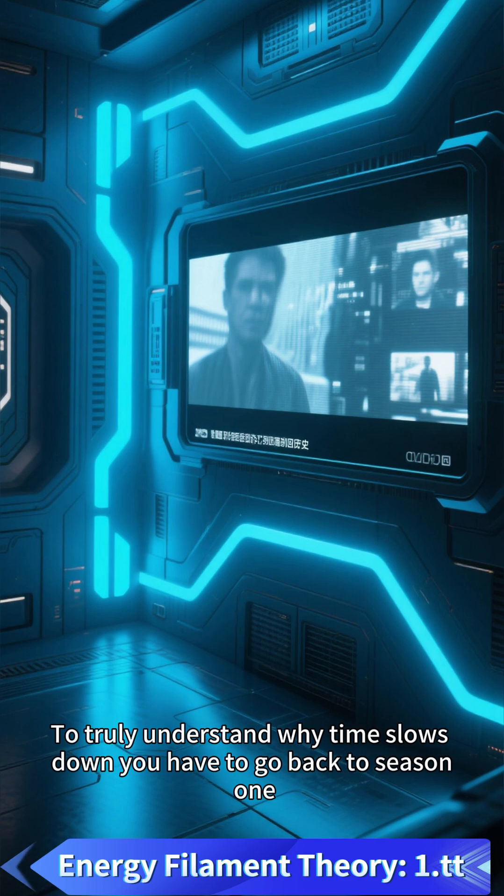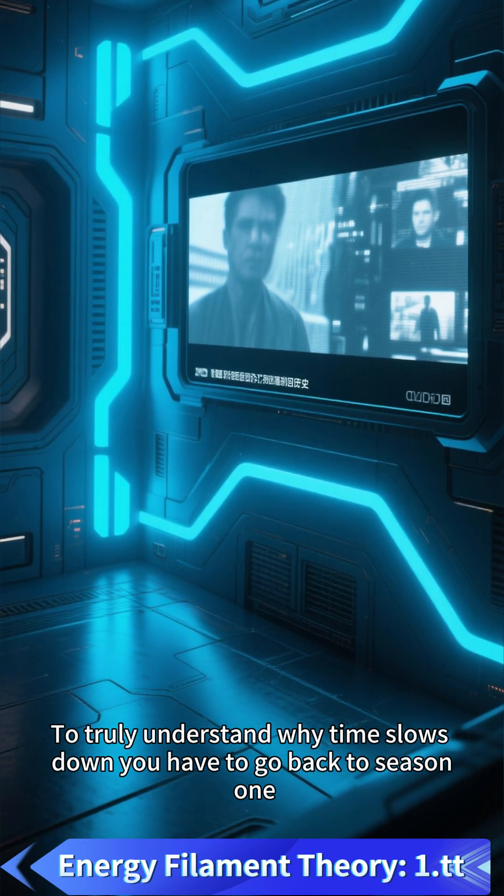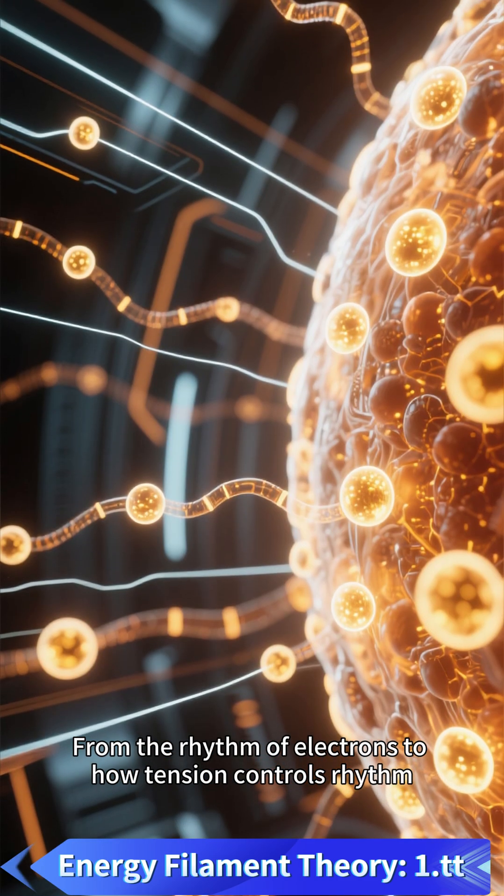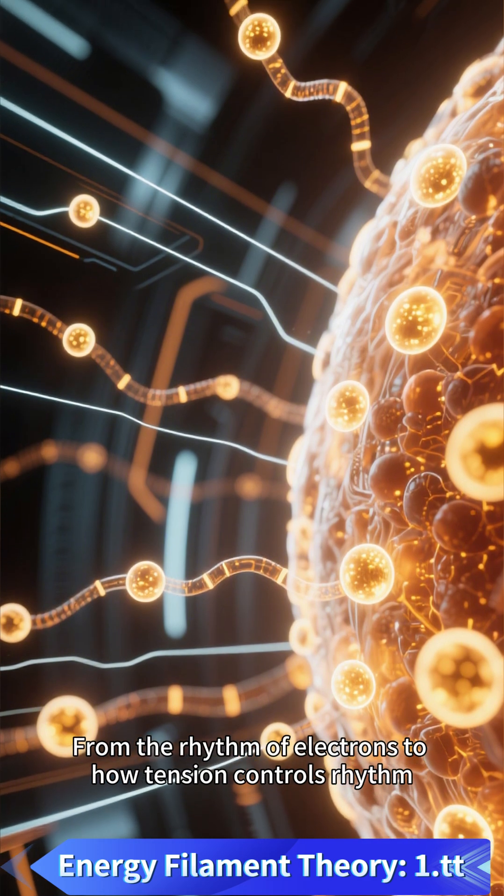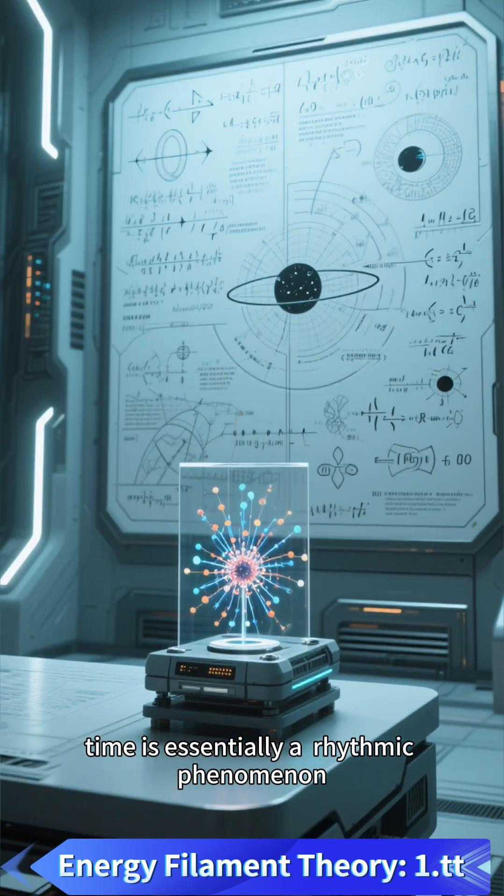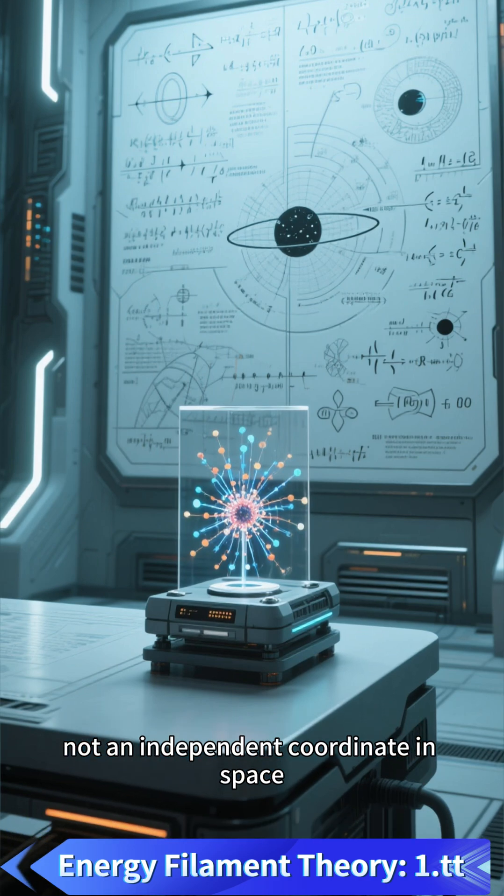To truly understand why time slows down, you have to go back to season 1. From the rhythm of electrons to how tension controls rhythm, time is essentially a rhythmic phenomenon, not an independent coordinate in space.